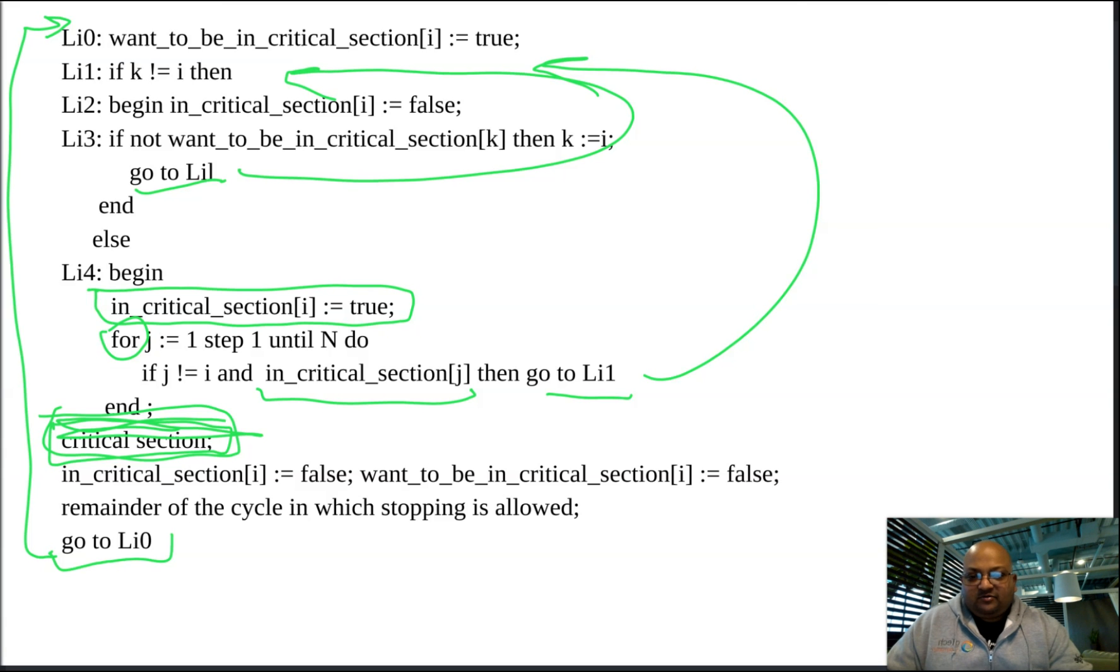Now, the next thing we want to prove is liveness. We want to prove that if multiple processes are trying to enter their critical section, at least one must succeed. All right, so let's see what Dijkstra is saying about liveness.